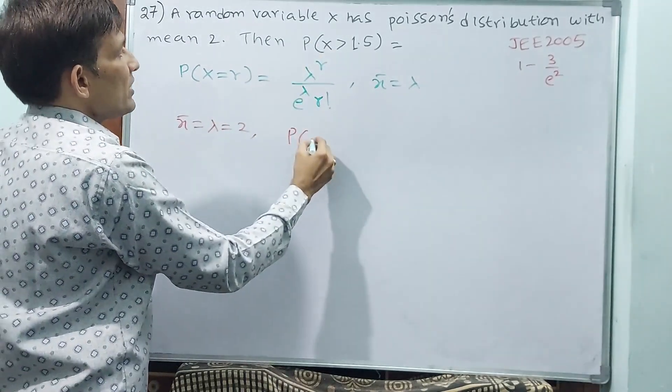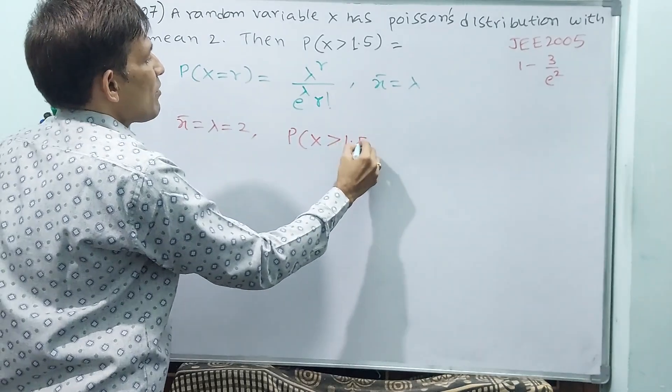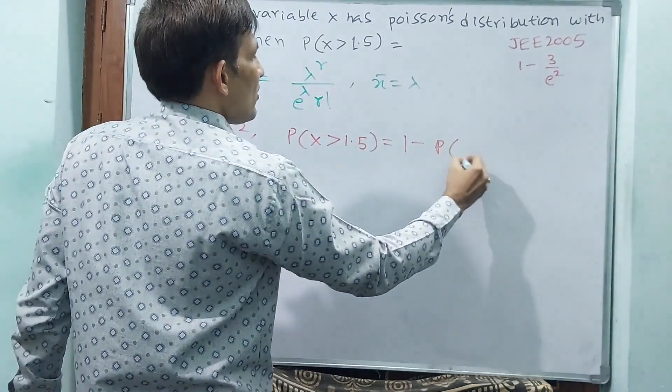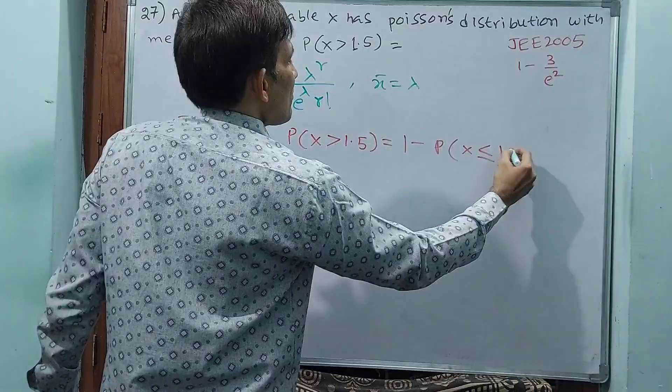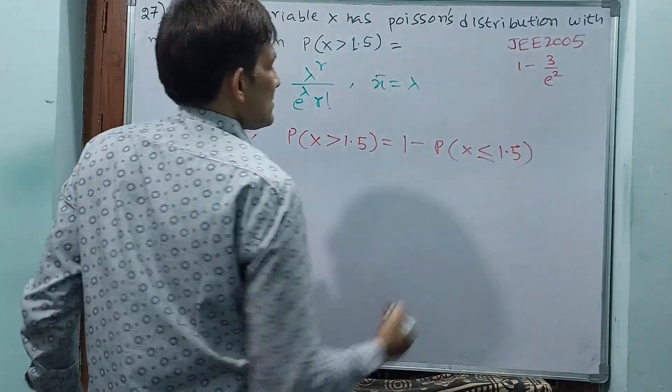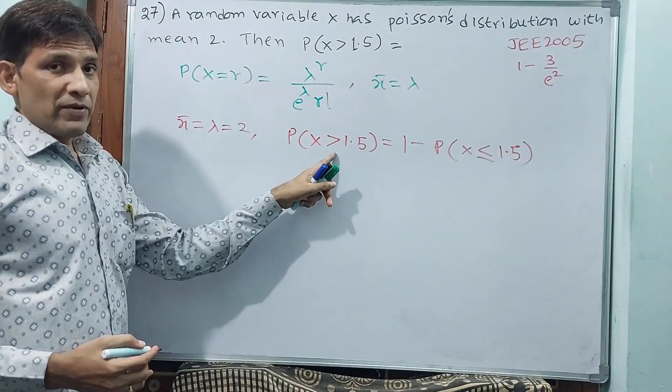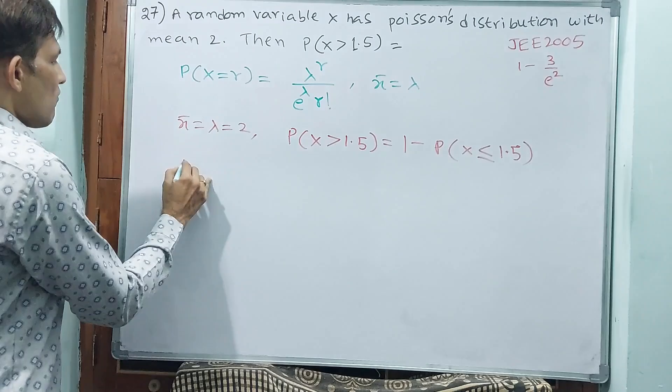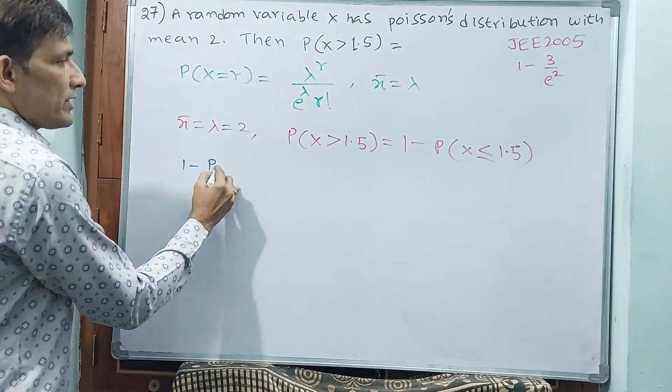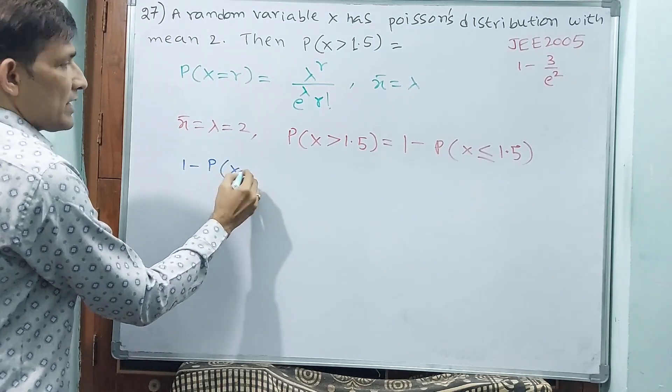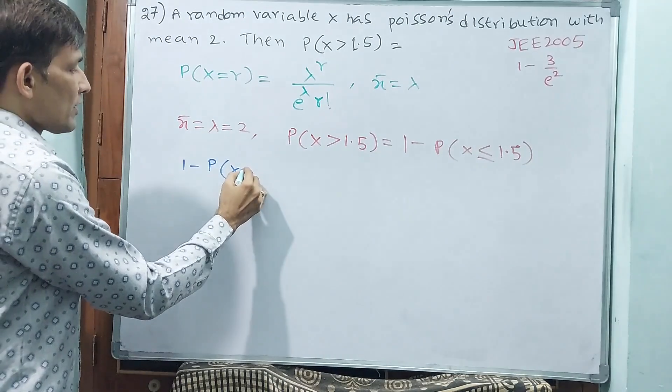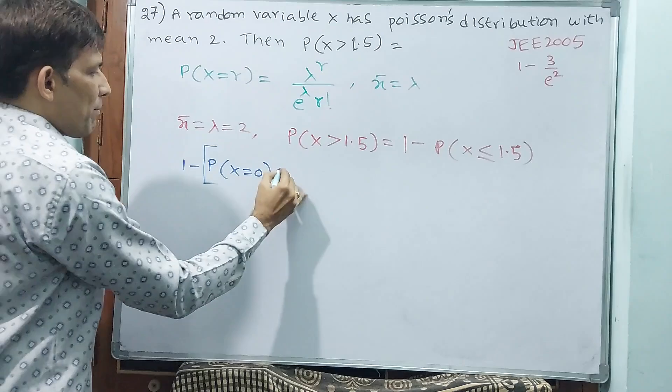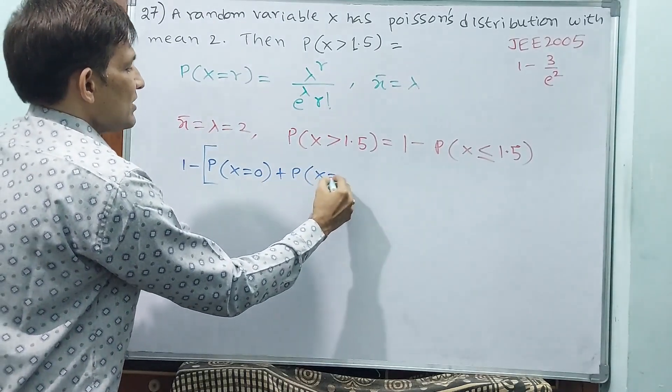That is equal to calculate like this. 1 minus probability of x is less than or equal to 1.5. Greater than 1.5 if you want to take, less than or equal to 1.5. So, if that is the case, you see, 1 minus probability of x equal to 0 plus probability of x equal to 1.